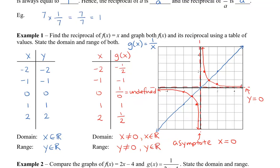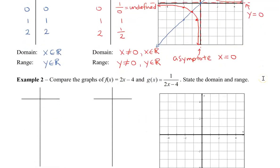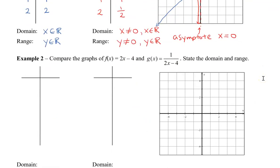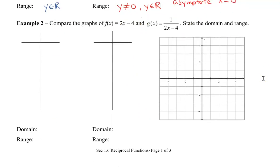Let's take a look at another example of a line which doesn't go through the origin. Here we have f of x equals 2x minus 4, and the reciprocal is g of x equals 1 over 2x minus 4. Let's compare the two.